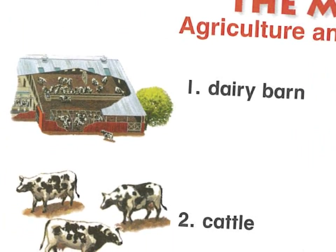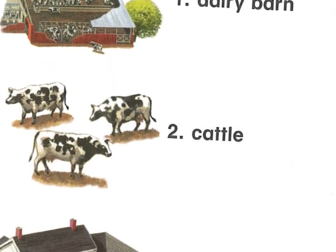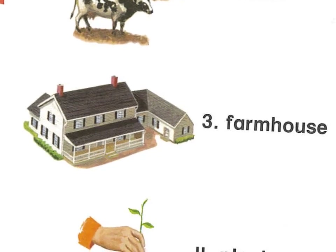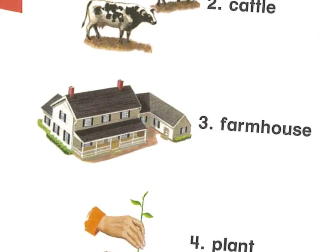A dairy barn is where cows are kept — there's a place for them to get water and food, and they're kept to be milked. A group of cows used for food are called cattle. Here we have a farmhouse — that's a pretty big farmhouse; most farmhouses aren't quite this big, but the front porch or veranda is typical.